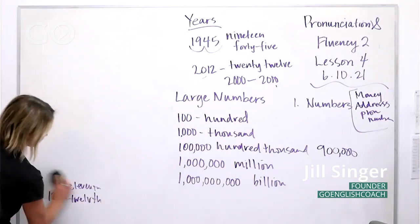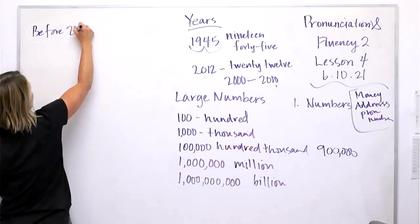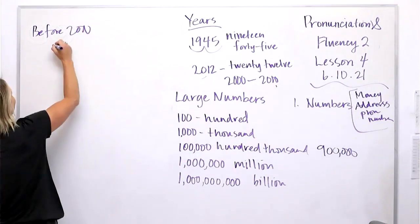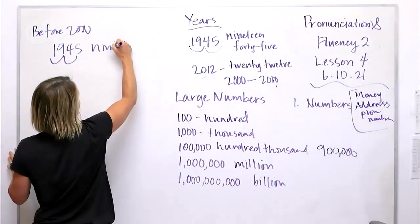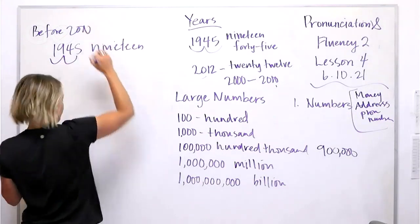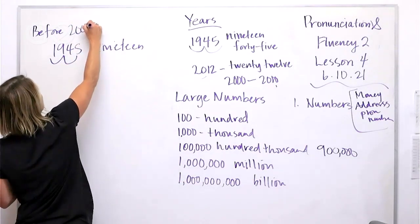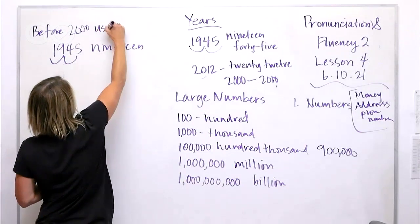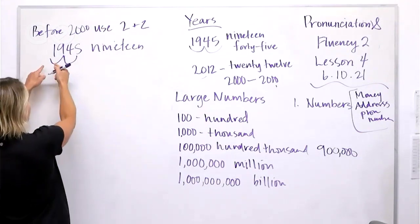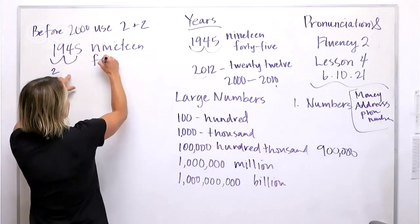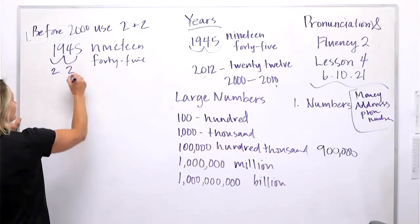What are the rules with years? Before 2000, we use what I call the 'two and two' rule. So for 1945, you say '19' and then '45' — two digits and two digits. That's a little quickie rule for you there.